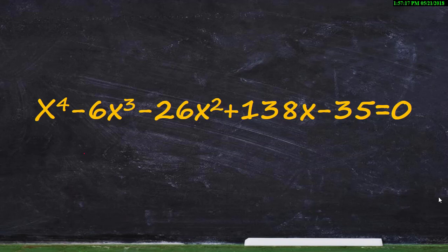x⁴ - 6x³ - 26x² + 138x - 35 = 0. So this is a bi-quadratic equation. We all know how to do a quadratic equation, but this is a bi-quadratic equation. Good morning everyone, my name is Lokesh. Let us join me in solving this question.